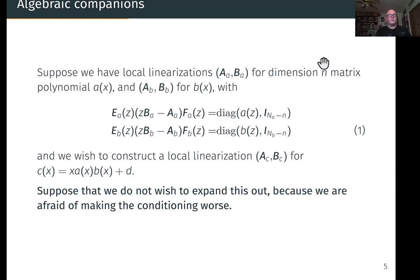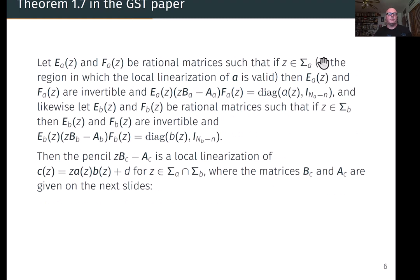Similarly, if we have the same thing for the matrix polynomial B of x, great, we've got these linearizations. Now what we want to do is construct a local linearization, a new one, for C of x, which is x times A of x times B of x plus D. So D is some constant matrix in dimension n. Suppose we do not wish to expand this out because we're afraid of making the conditioning worse. As a numerical analyst, that's a natural thing to want. Can we do that? Yes.